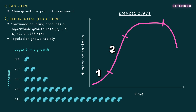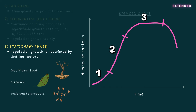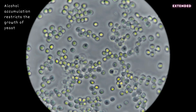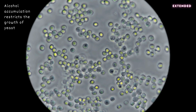For example, when a population of four doubles, it has little or no impact on its habitat. However, when a population of a thousand doubles, it puts far more strain on the habitat's resources and dramatically increases competition for food and space. As the population enters the stationary phase, limiting factors come into play: the food supply may no longer be sufficient to support further expansion, diseases may spread more easily due to overcrowding, or waste products may accumulate that inhibit growth — for example, alcohol released as a by-product of anaerobic respiration in yeast kills yeast when concentrations get too high.